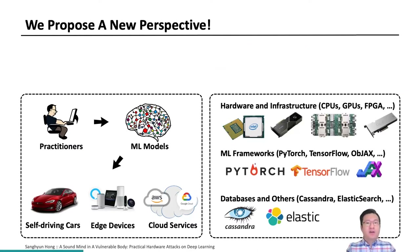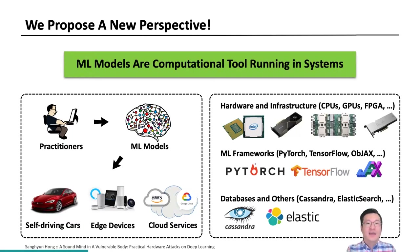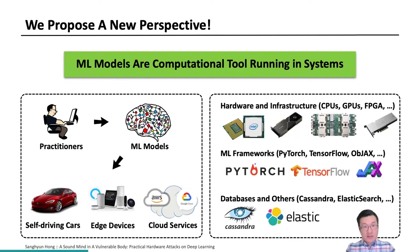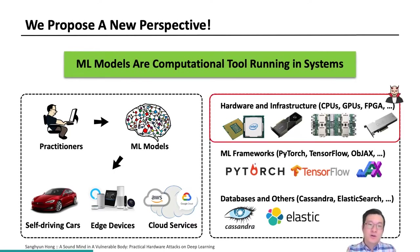Here I propose a new perspective of looking at machine learning models. I encourage the community to look at machine learning models as another computational tool or software running in many computer systems. From this unique perspective, we can easily imagine that machine learning models may become vulnerable to existing hardware or software-level vulnerabilities. And more importantly, those models may have computational properties that traditional tools do not have, which makes them particularly more vulnerable to hardware or system-level vulnerabilities. In this talk, we focus our scope on hardware-level vulnerabilities.